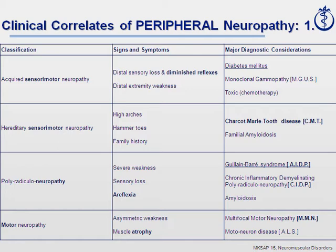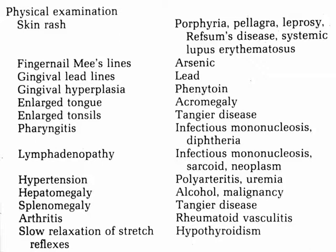Going back to the clinical correlates of neuropathy table: diabetes is the main one to look for if there's a sensory motor neuropathy — both sensory complaints and weakness. For hereditary, look for Charcot-Marie-Tooth with those physical features. Where there's a demyelinating neuropathy that's progressive, look for either Guillain-Barré — AIDP — or CIDP, which is more chronic.